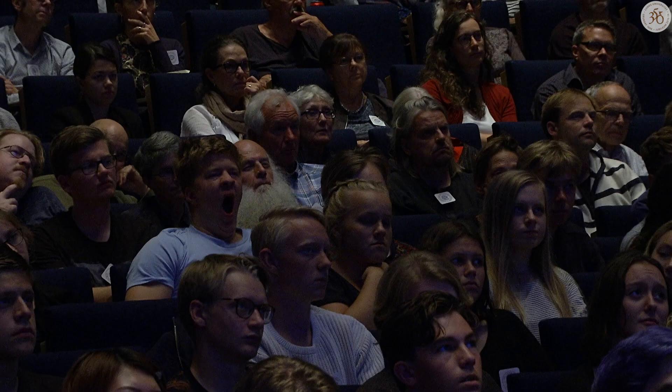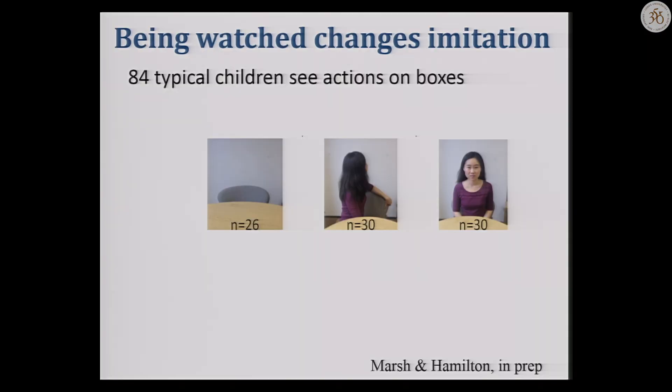We did studies to look at whether direct gaze changes children's imitation behavior. We had primary school children see the tapping-on-top-of-the-box action, but the experimenter behaved differently for different children. For 26 kids, she showed the action then walked out of the room. For 30 kids, she showed the action then turned away. For the other kids, she stayed directly looking at them. Whether the person is looking when the child responds causes a big difference: children imitate much more when they're being watched, especially when the experimenter looks directly at them versus turns away.